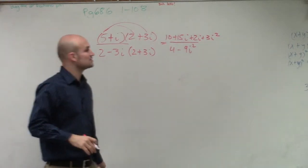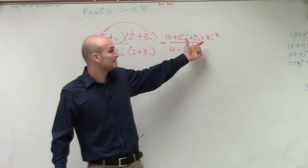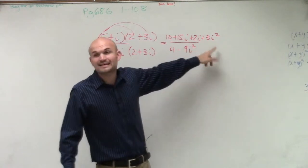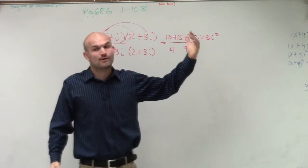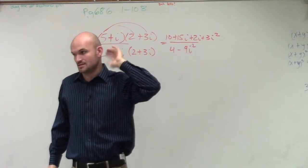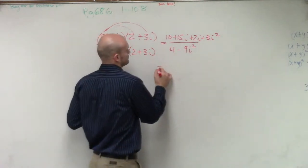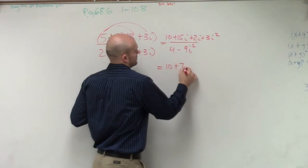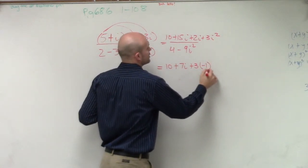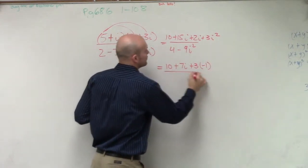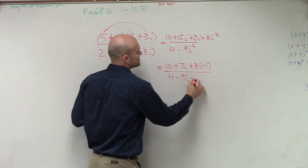Now the next thing we need to understand is we can combine our like terms up here. We need to remember that i squared — from the last video — i squared represents negative 1. So I'll substitute negative 1 in for i squared. On the bottom, that's 4 minus 9 times negative 1.